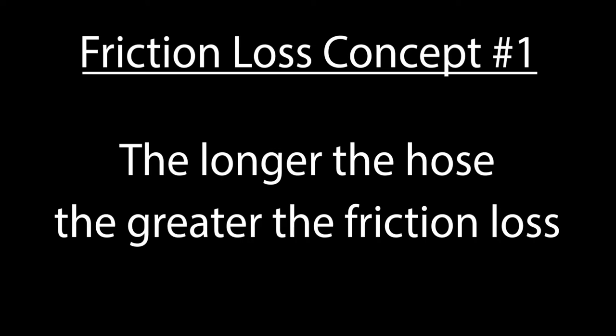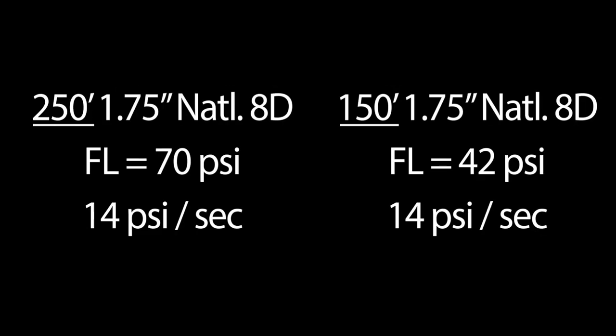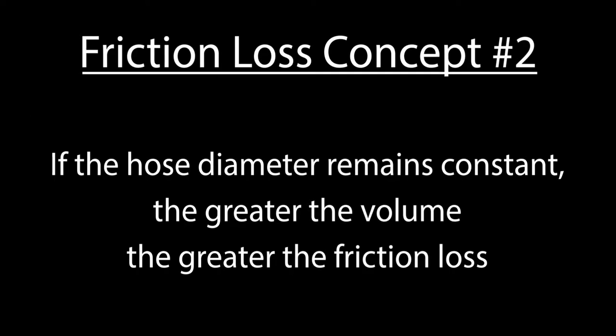Remember that the first concept of friction loss states that the longer the hose, the greater the friction loss. Conversely, the shorter the hose, the lower the friction loss. If we remove two sections, or 100 feet of our hose, we will see that our total friction loss drops to 42 PSI. You will also notice that the friction loss per section remains the same at 14 PSI.